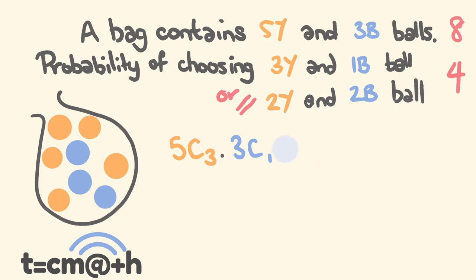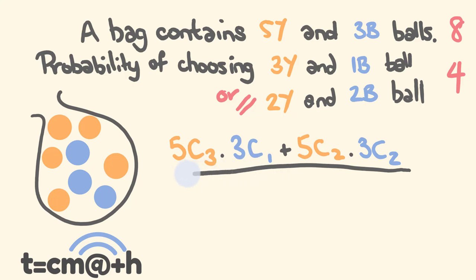This is going to be added to the next scenario: from five balls, choosing two yellow. This is multiplied by the number of ways to choose two blue balls out of three — so 3C2. All of this goes over the total combinations: 8C4.